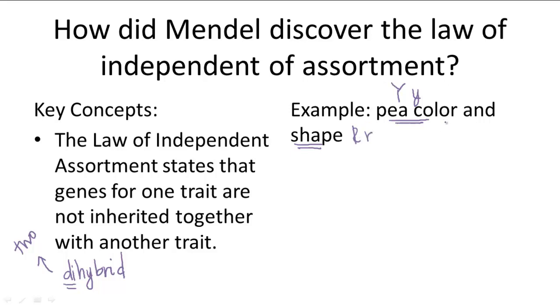So because he was crossing two heterozygous organisms, the heterozygous organisms have a genotype of big Y, little y, big R, little r, and a cross together will look something like this.